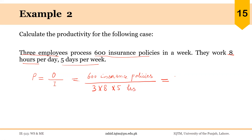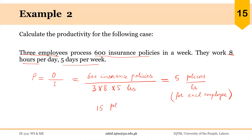So the answer will be 600 over 120, which gives 5 policies per hour. This is the productivity of each employee. If we are talking about this department as a whole, then the productivity will be 5 into 3, so that will be 15 policies per hour for the department.